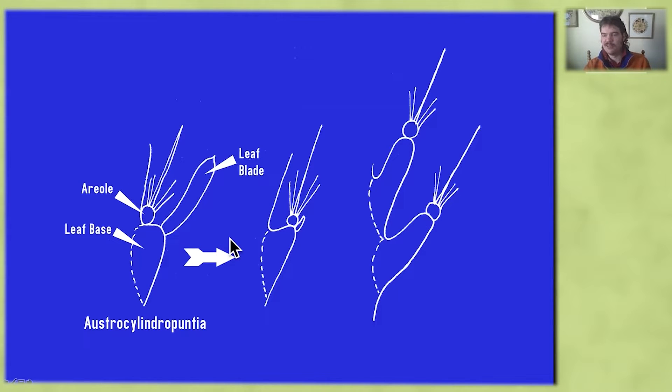When we move into the Cactoideae subfamily within the cactus family, what we see is the areole, the axillary bud, moving from this axillary position up onto the very tip of that leaf base. And then the leaf blade becoming greatly reduced, and in older tissues disappearing entirely.